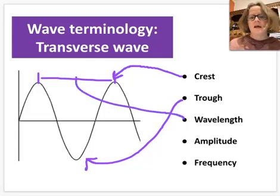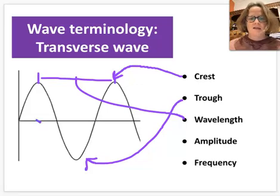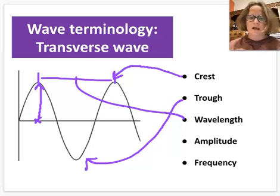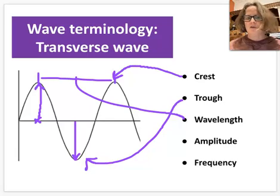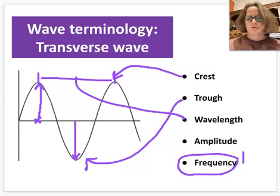The amplitude is the size of the wave — how far particles move from where they would be without the wave. As wave energy moves across them, particles are displaced from their resting position all the way up to the crest. The amplitude going down to the trough matches the amplitude going up, and they are equal. Frequency is the number of waves that pass a point every second, and its unit is the hertz, symbol Hz.